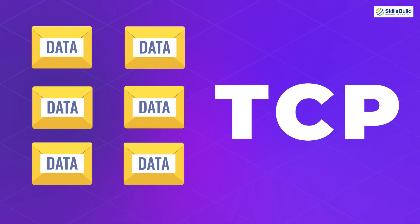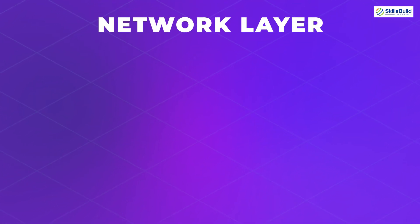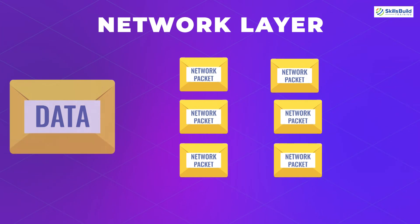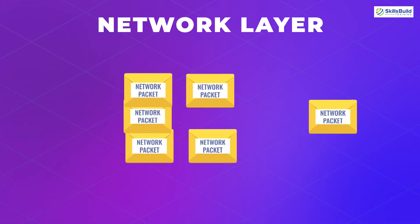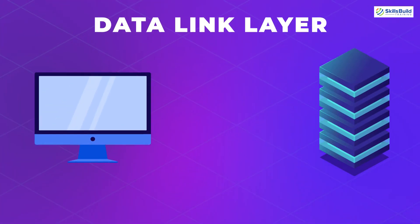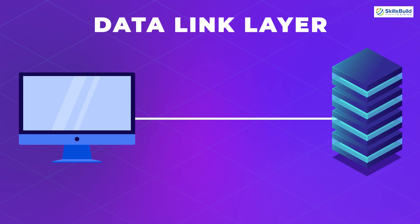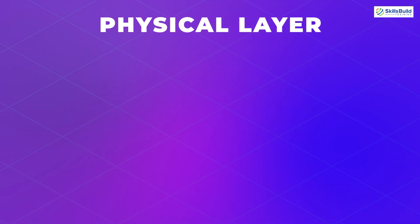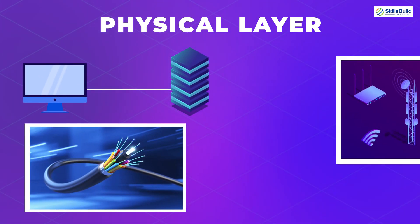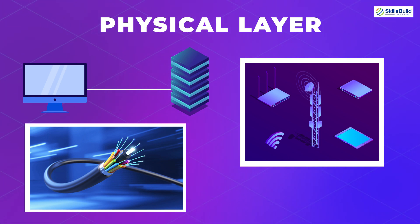The TCP protocol works at the transport layer. The network layer has two functions: breaking segments into network packets, and reassembling those packets on the receiving end. The IP protocol works at this layer. The data link layer is responsible for establishing and terminating the connection between two physically connected nodes. The physical layer is responsible for the physical connection between network nodes, which can be through physical cables or a network — in modern internet, both means of connection are used.